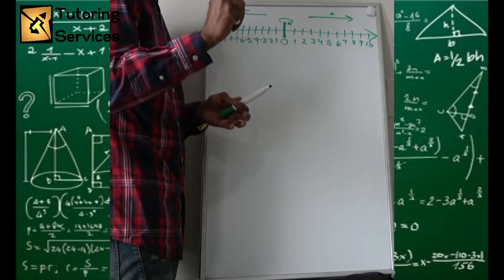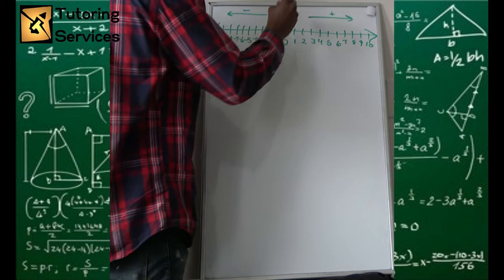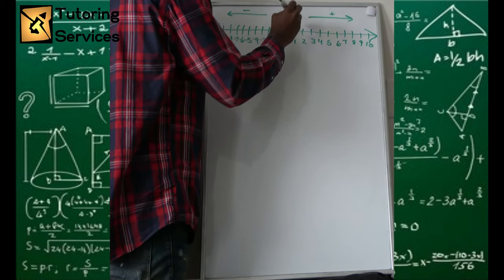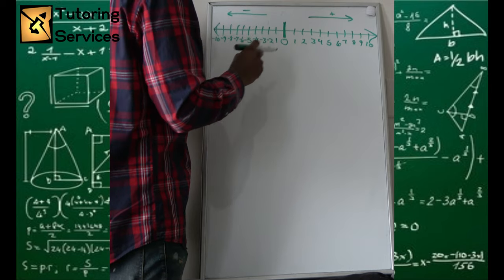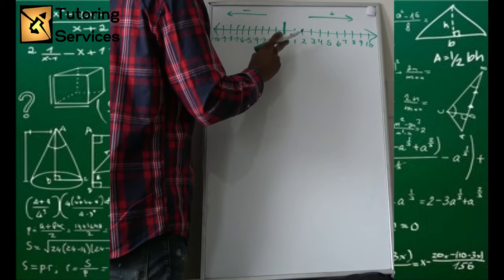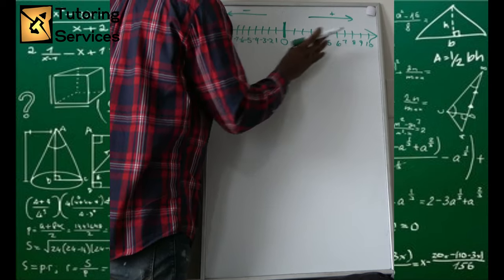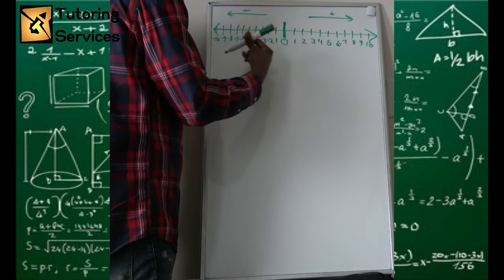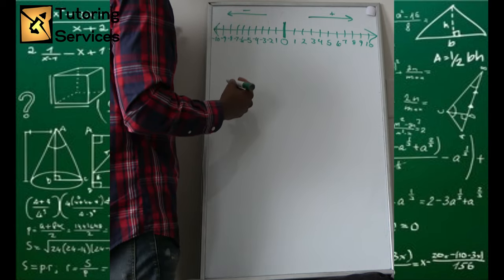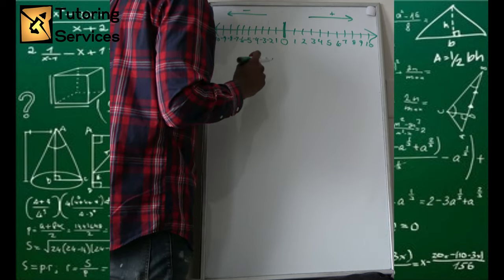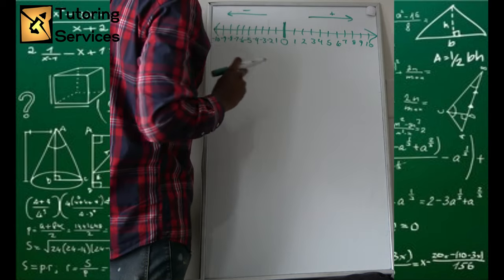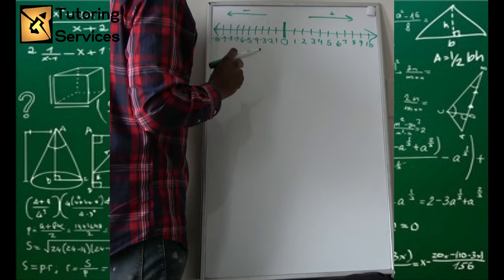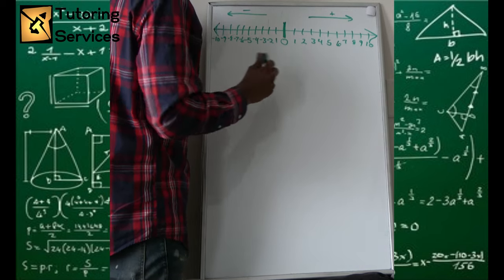So the greater something is, the more along the positive direction it'll be. The smaller something is — or the less something is — the more in the negative direction it'll be. And that's a life jewel if you care to apply this outside of mathematics.